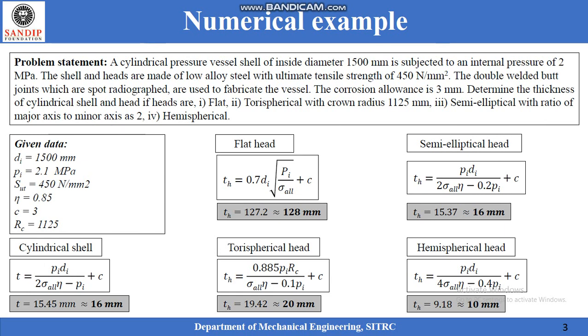The given data can be extracted from the problem statement as follows: internal diameter 1500 mm, design pressure is taken as 2.1 MPa. It should be noted that the internal pressure is 2 MPa, but as we have seen in the last lecture, we have to consider the design pressure which is 1.05 times the internal pressure. Hence the design pressure is 2.1 MPa.